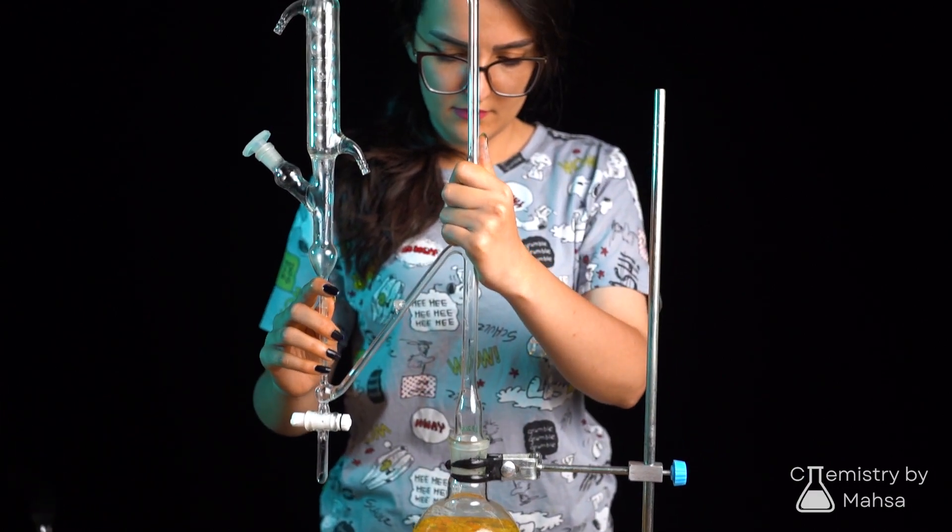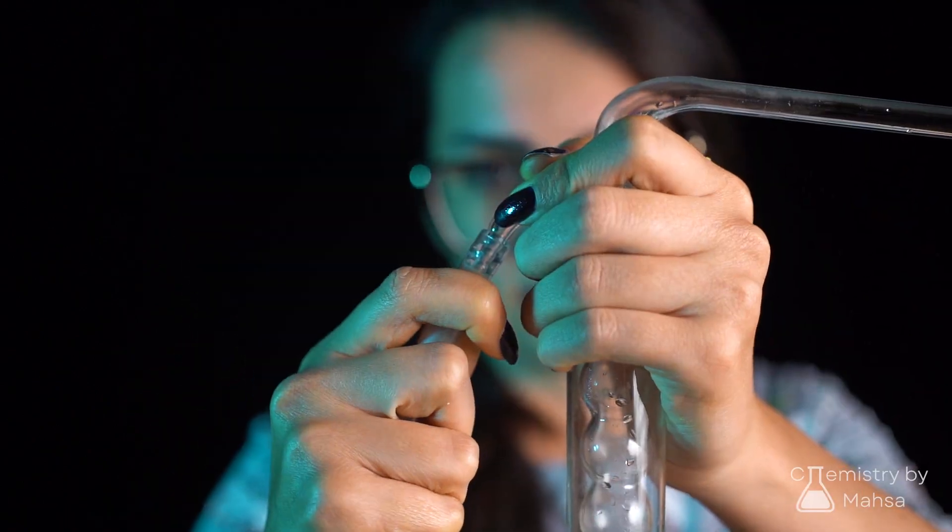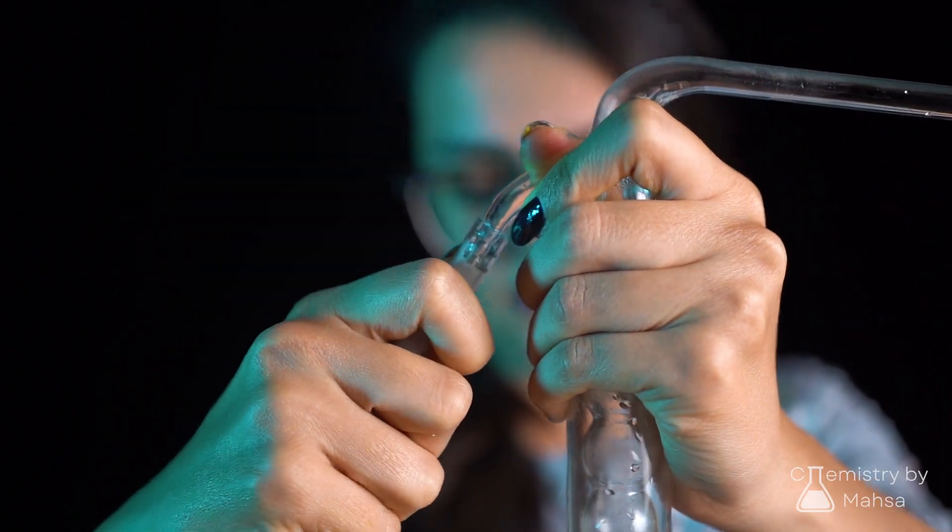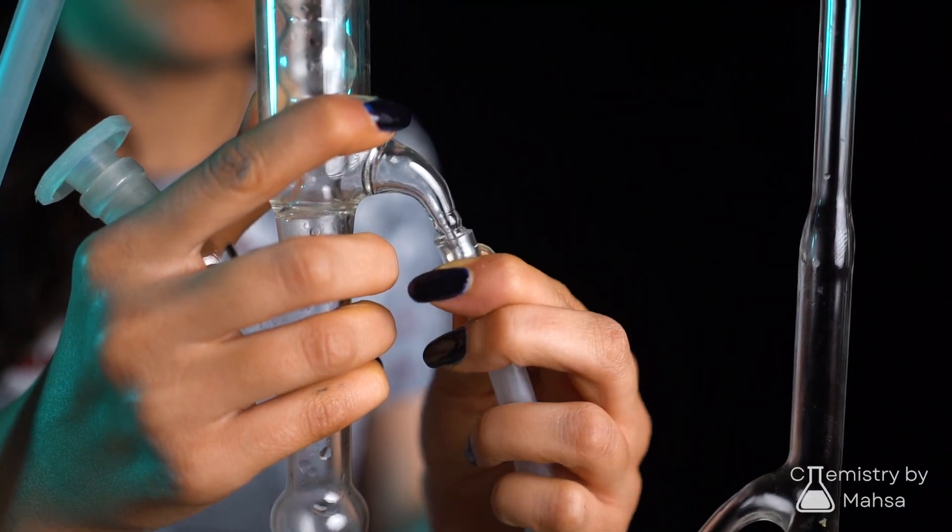For the next step, the apparatus was set and checked for the seals to be completely fit. Then the silicone hoses should be attached, and again make sure to have them fit so there won't be any leak in the middle of the process.